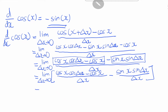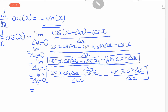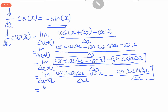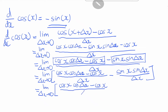So this equals the limit as delta x goes to 0 of cosine x · cosine(delta x) minus cosine x over delta x, minus the limit as delta x goes to 0 of sine x · sine(delta x) over delta x.